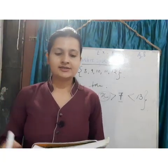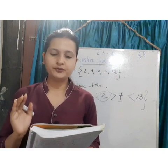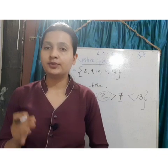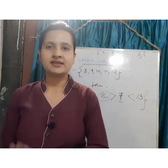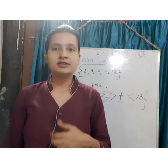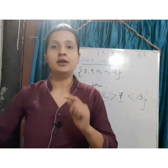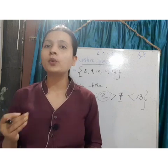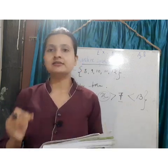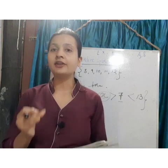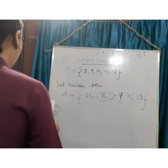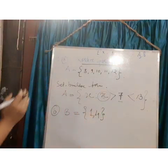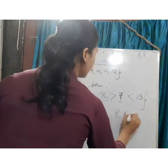Let us try question 1B: squares of natural numbers which are less than 7. We consider natural numbers 1, 2, 3, 4, 5, 6. Square of 1 is 1, square of 2 is 4, square of 3 is 9 — but 9 is greater than 7. We are asked for squares less than 7, so only 1 and 4. The roster form is B = {1, 4}.